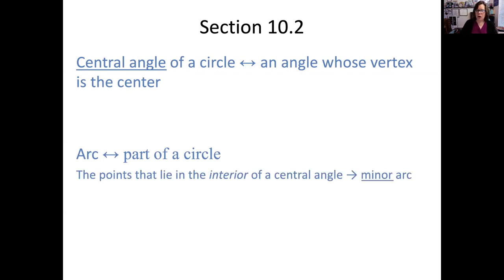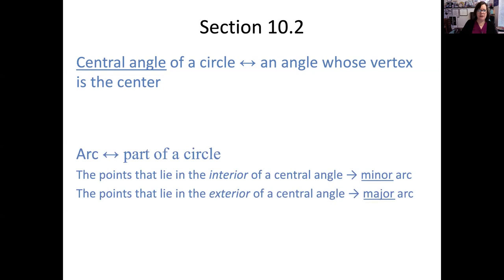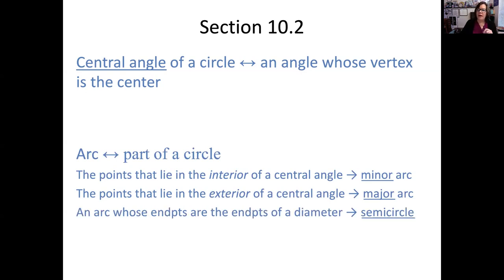The smaller arcs — the points in the interior of a central angle — are called minor arcs. The points on the exterior of the central angle form a major arc. And if our angle happens to be a straight angle, making it a diameter and being a central angle, then it cuts the circle into semicircles.